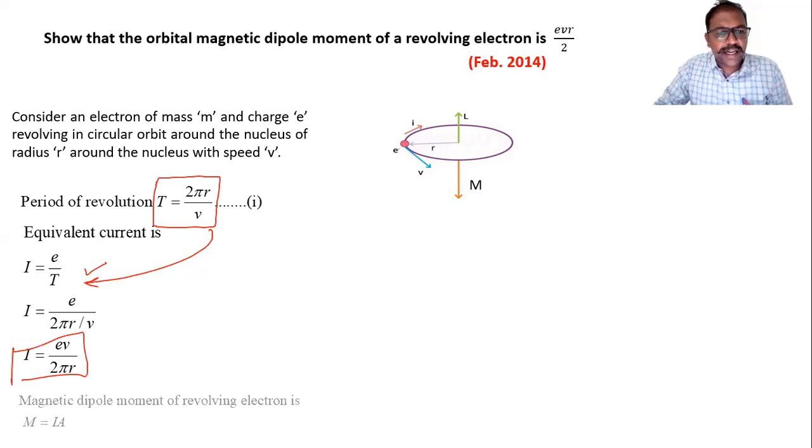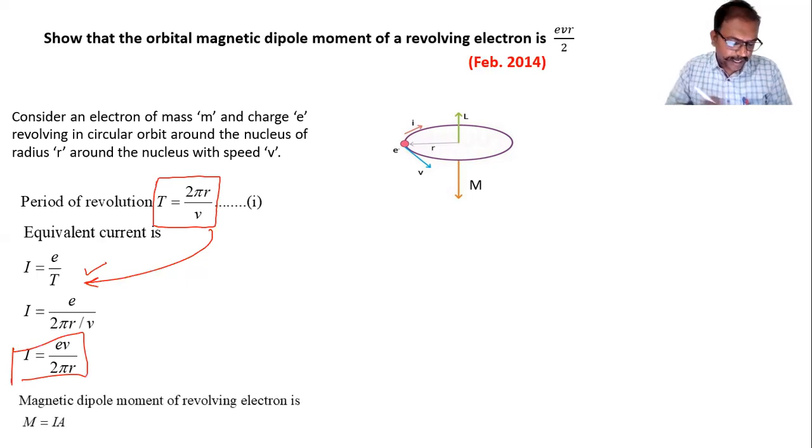Now after that, next step is magnetic dipole moment of revolving electron is given by this formula I into A. So we have to substitute this I in this formula. And A is an area. Electron is moving in a circular orbit. So area of circle is pi R square that we can use. So here, I substituted this I and this area is pi R square.